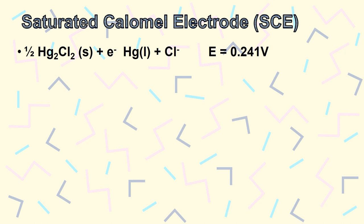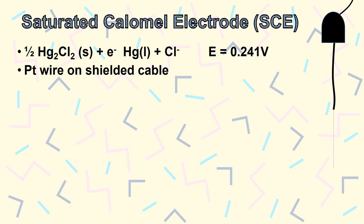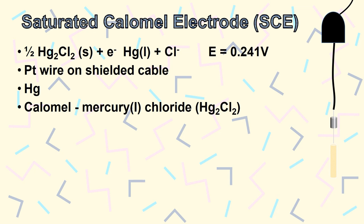Now let's examine the parts. The core of the device is a small platinum wire. There's a small amount of mercury and mercury(I) chloride, or calomel, in contact with the platinum wire. Those chemicals are all contained within a glass tube, and a fibrous material keeps the calomel inside the tube.